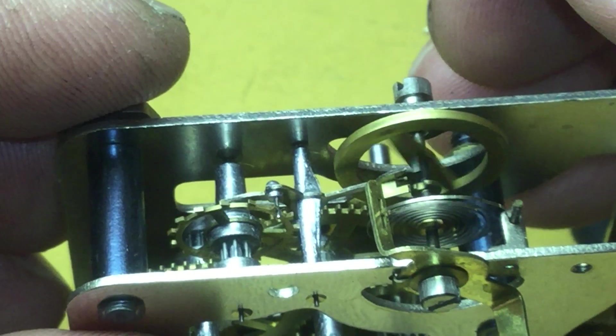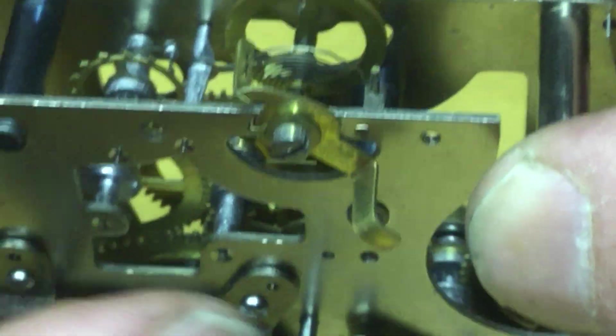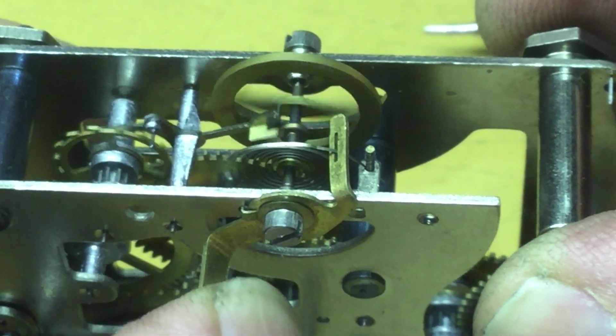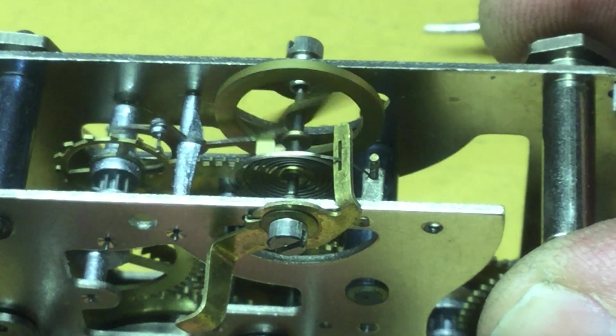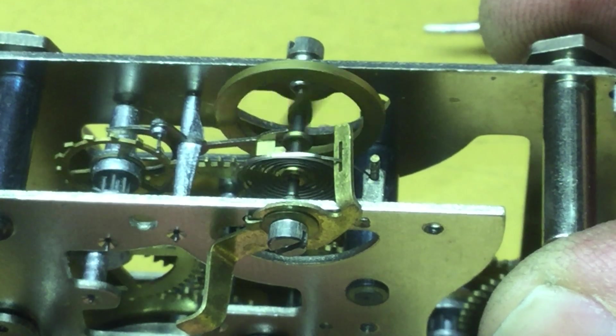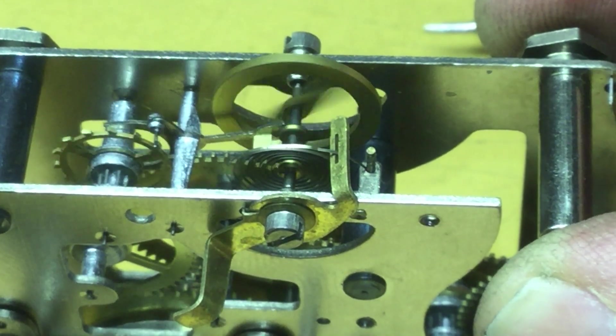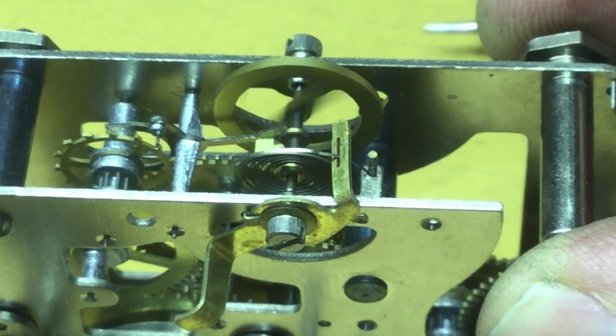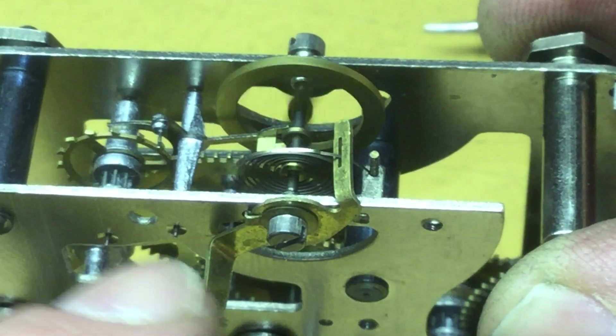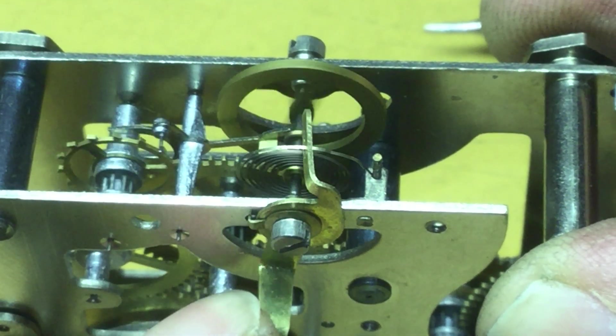So we might need to take a look at the escapement and see if there's an issue. You saw when I moved the regulator to the slow position, the motion increased dramatically. It's telling me there might be a beat problem with this hairspring here. You see how moving the regulator is affecting the hairspring slightly.